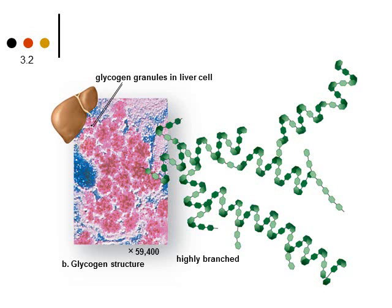This image shows glycogen in our liver — this is how humans and other animals store energy. You can see the green monomers all bonded together, and this molecule has lots of branches, so it looks kind of messy. That's where we have our energy storage.